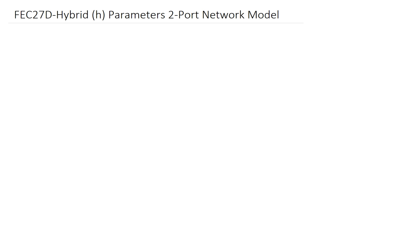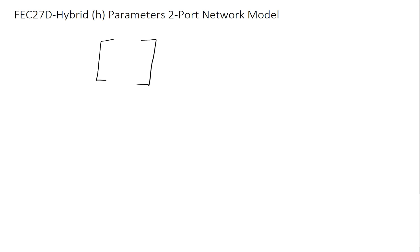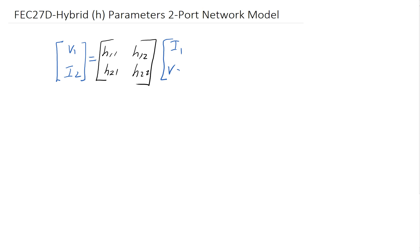We're going to treat H parameters just like another set of parameters we can use to describe a two-port network. The H parameters are represented in a two-by-two matrix, and much like the other parameters, their naming scheme is based on location in the matrix: H11, H12, H21, and H22. On the left side of the equation we will have the vector V1 and I2, related to I1 and V2.